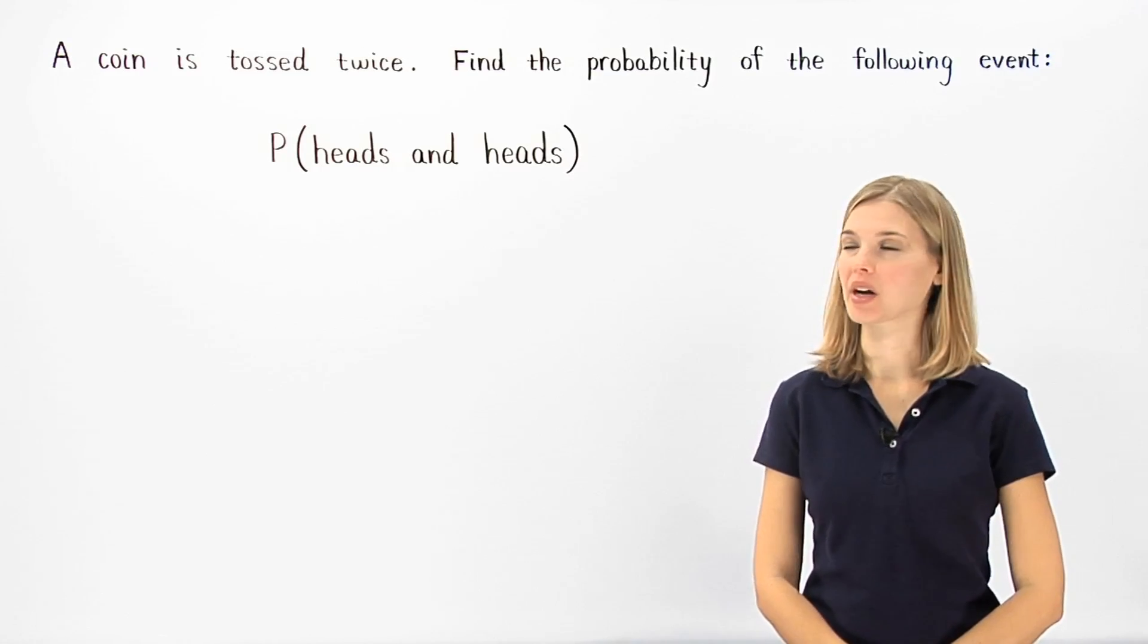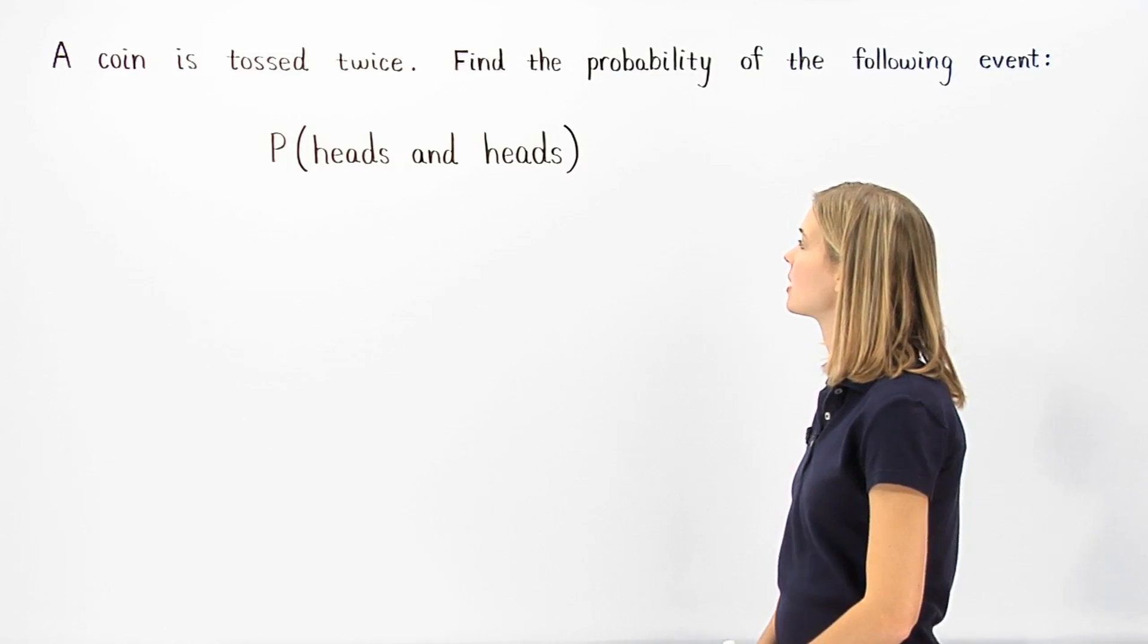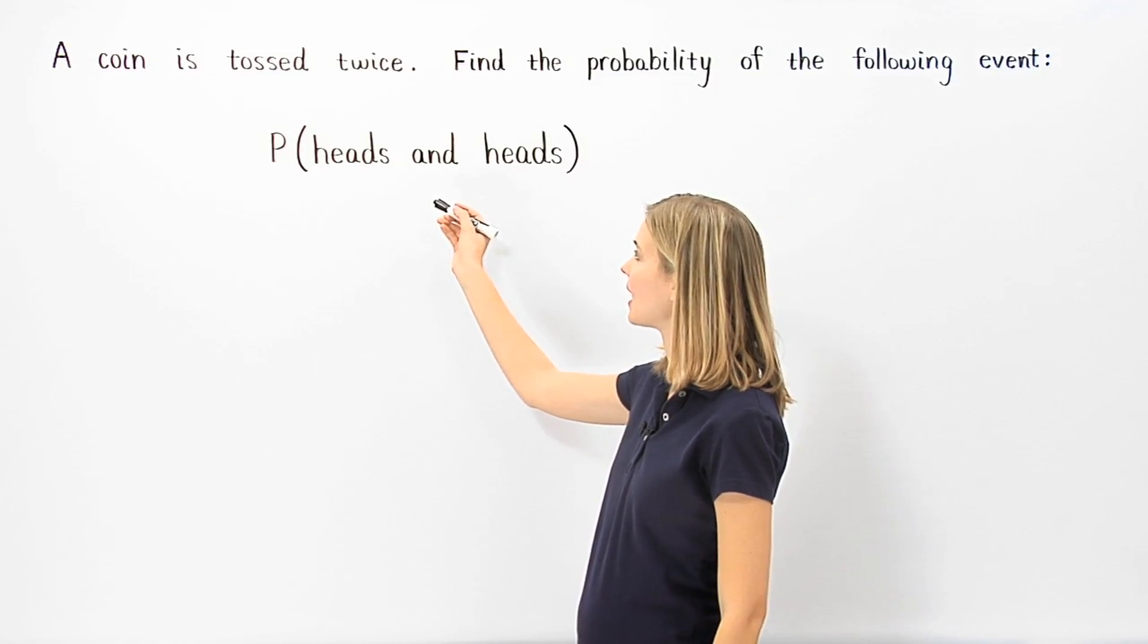In this example, we're given that a coin is tossed twice, and we're asked to find the probability of getting heads and heads.